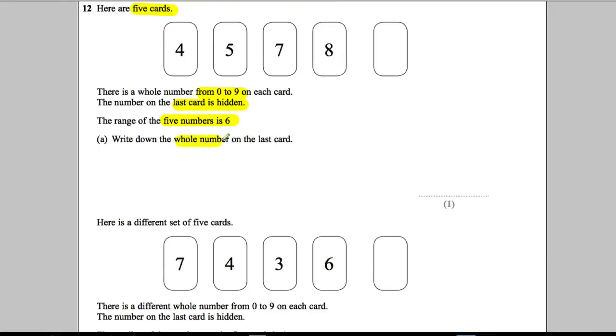Write down the whole number on the last card. Now let's think about this. The range - this is key. We have to know what the meaning of the word range is. So we're told that the range of the numbers is 6. Now the range means the biggest number take away the smallest. The biggest subtract the smallest.